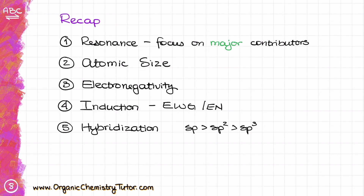You may also have heard of the ARIO model: A stands for Atom (atomic size), R for Resonance, I for Induction, and O for Orbital (hybridization and electronegativity). It describes the same stability factors. Are you ready for some practice questions? Head to OrganicChemistryTutor.com for practice material, and let me know how it goes. Any questions, comments, or feedback — let me know in the comments below, and I'll see you in the next video.